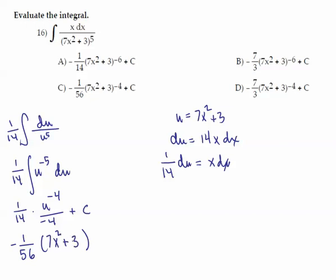So we have a negative one over 56, 7x squared plus 3 to the negative fourth, and that is option c.